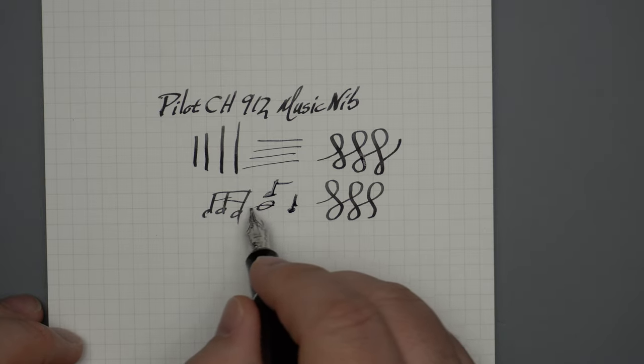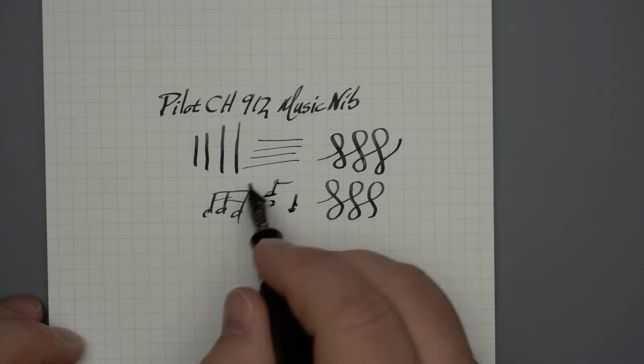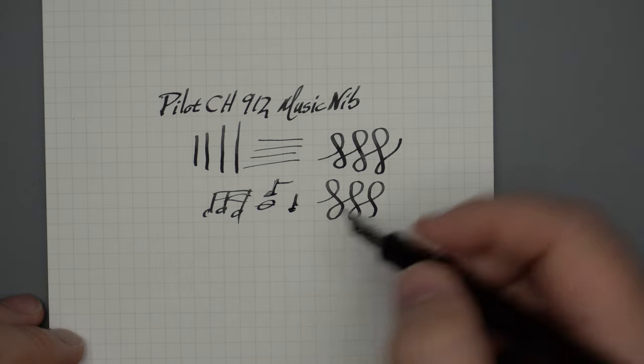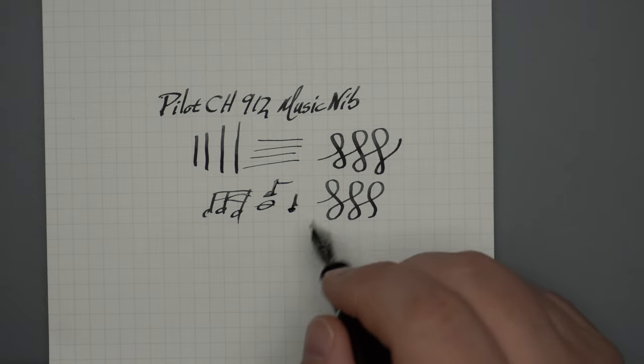So this is a nice thing that will allow you to do like thick and thin lines. You can get those, you know, little dash lines in there for the sixteenths or whatever, or I don't know, some 30 seconds. Why not? Right. But you can go ahead and write music with this if you like.